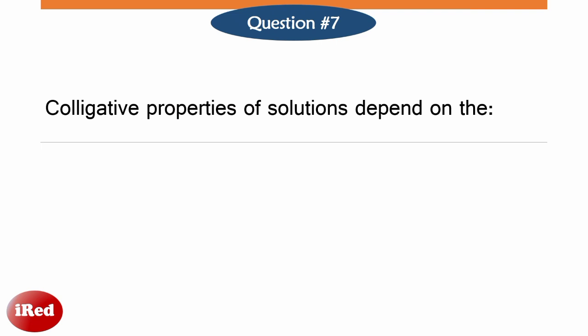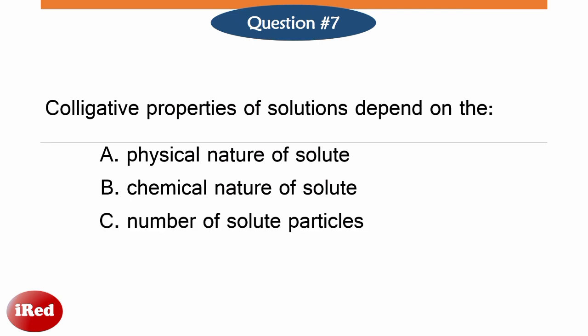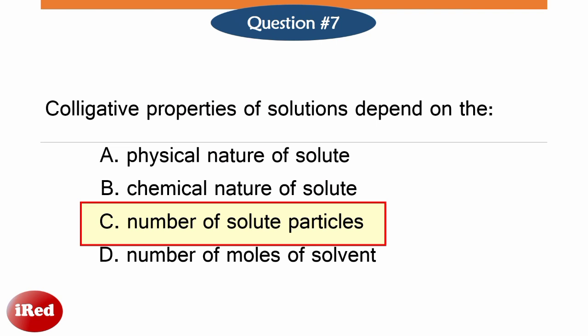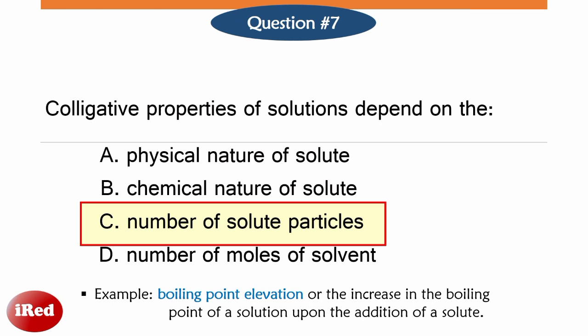Number 7. Colligative properties of solutions depend on: A physical nature of solute, B chemical nature of solute, C number of solute particles, or D number of moles of solvent. Colligative properties are properties that depend on the number of solute particles. For example, pure water boils at 100 degrees Celsius, but with the addition of salt, the boiling point of the salt and water solution becomes higher than 100 degrees Celsius.